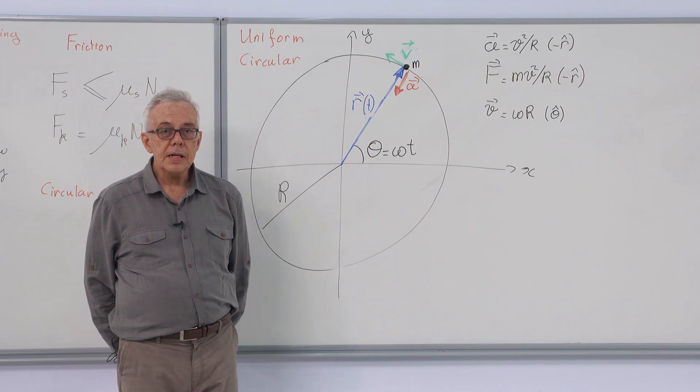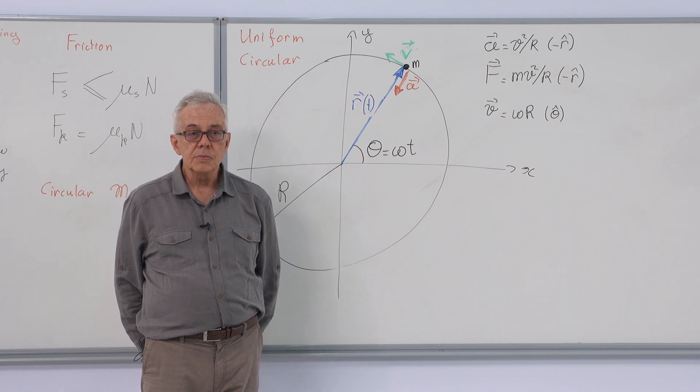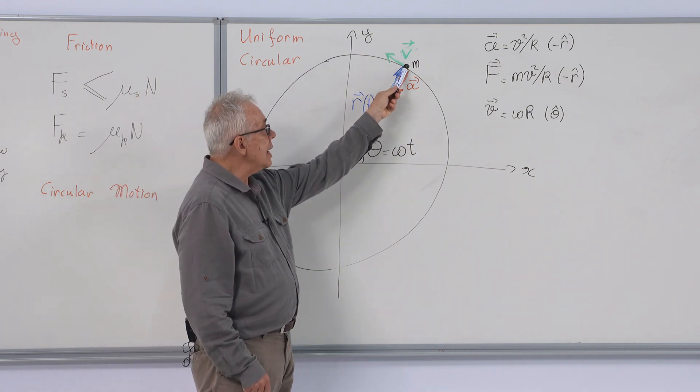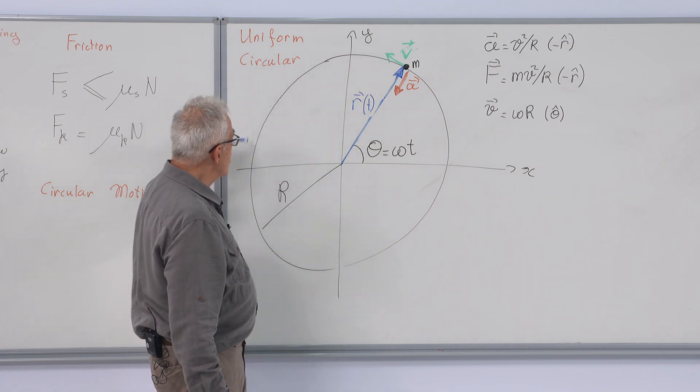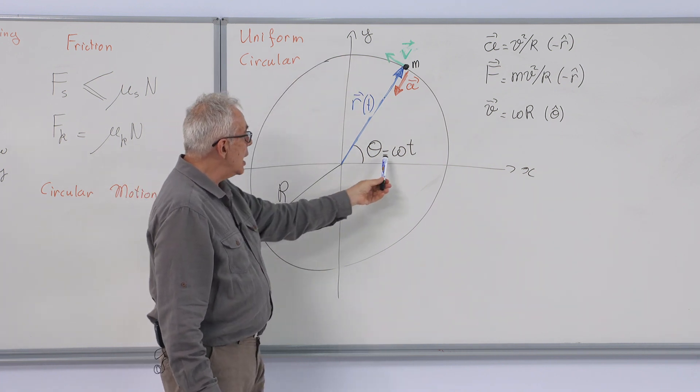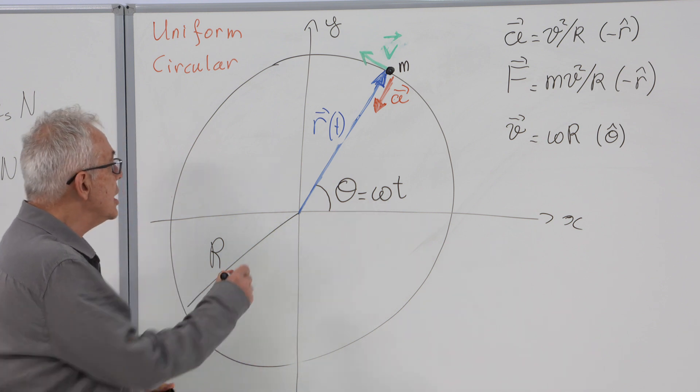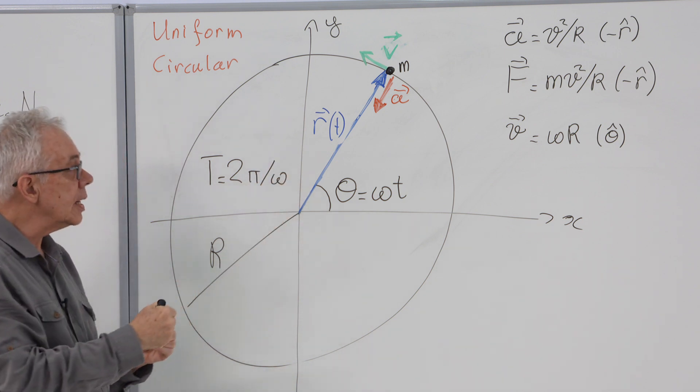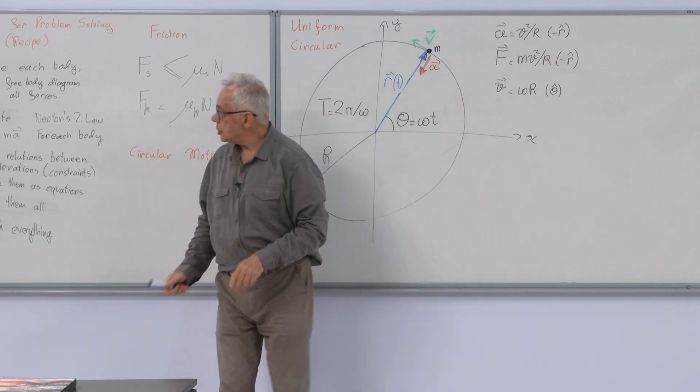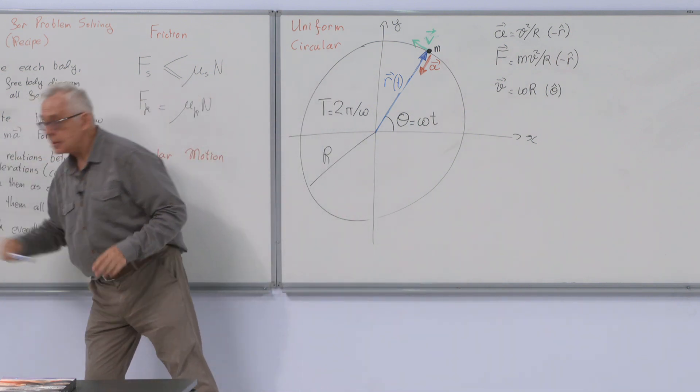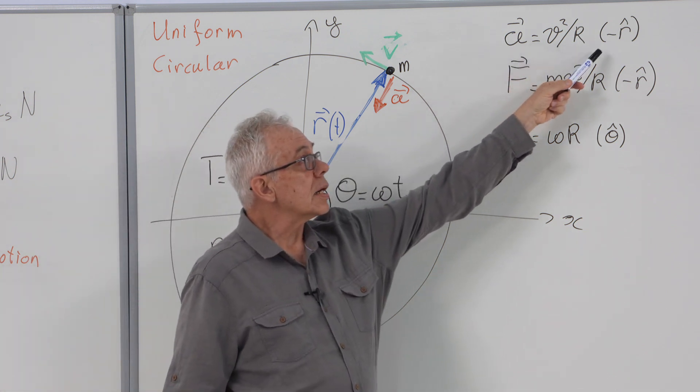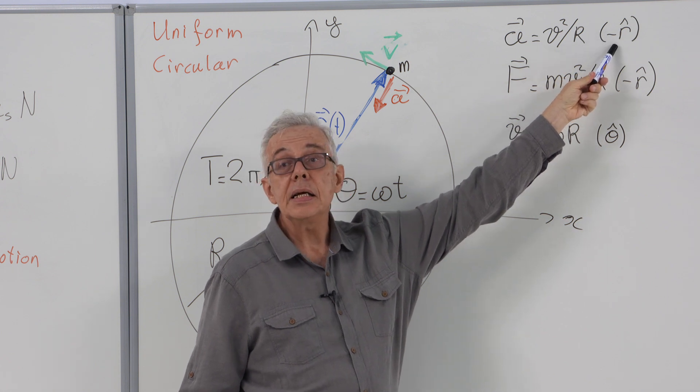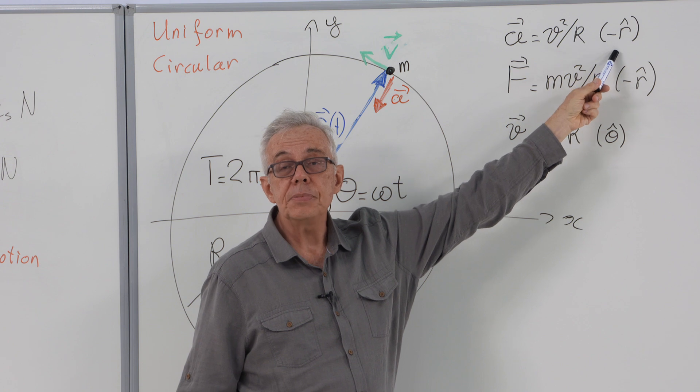Our second topic in this video will be circular motion. First, uniform circular motion. I have a body of mass m performing uniform circular motion with radius r and angular speed omega, so that its period is T equals 2 pi over omega. The acceleration we have already noted as v squared over r, directed radially inward, in the centripetal direction.